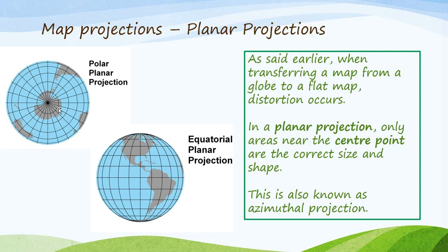In a planar projection, only areas near the center point are the correct size and shape. For example, Antarctica is directly in the center of the globe underneath, at the south pole, so it is the correct size and shape. These kinds of projections are also known as azimuthal projections.